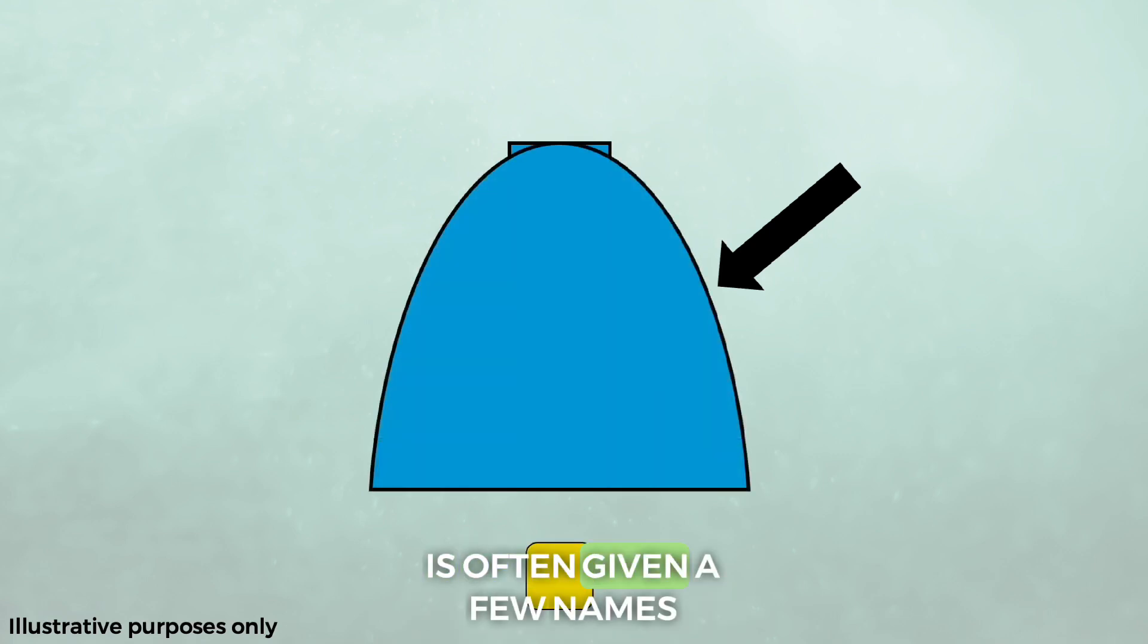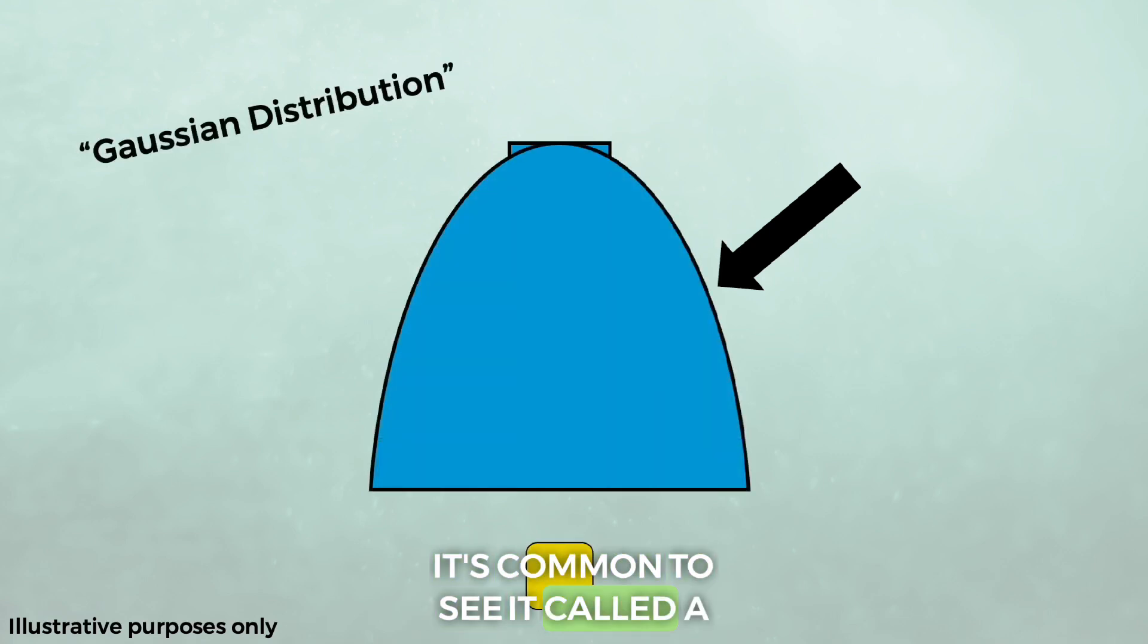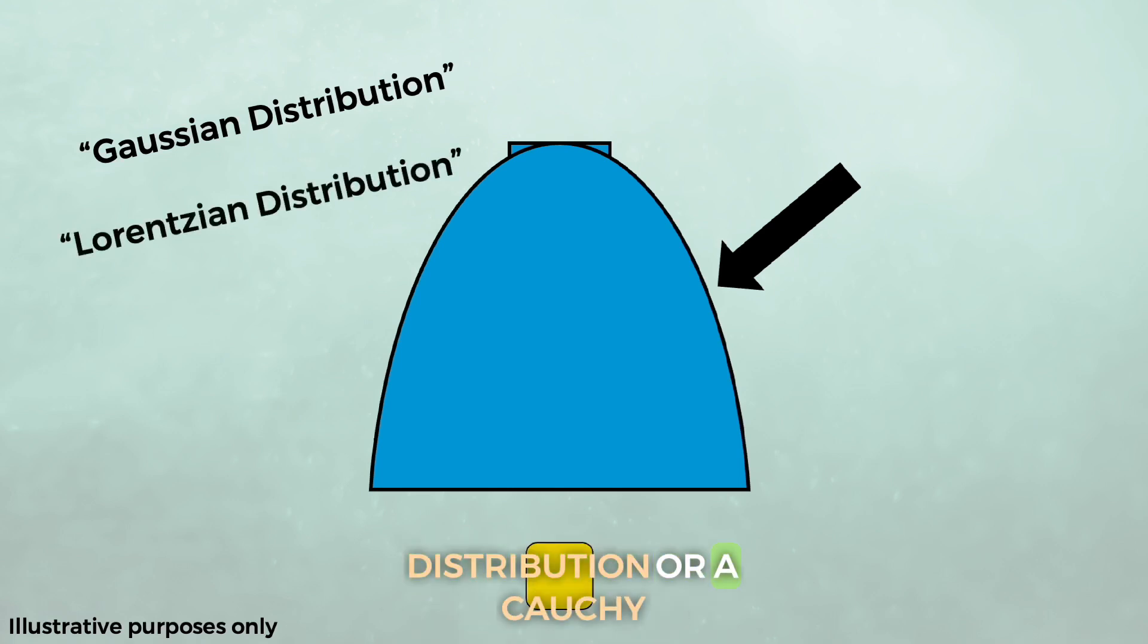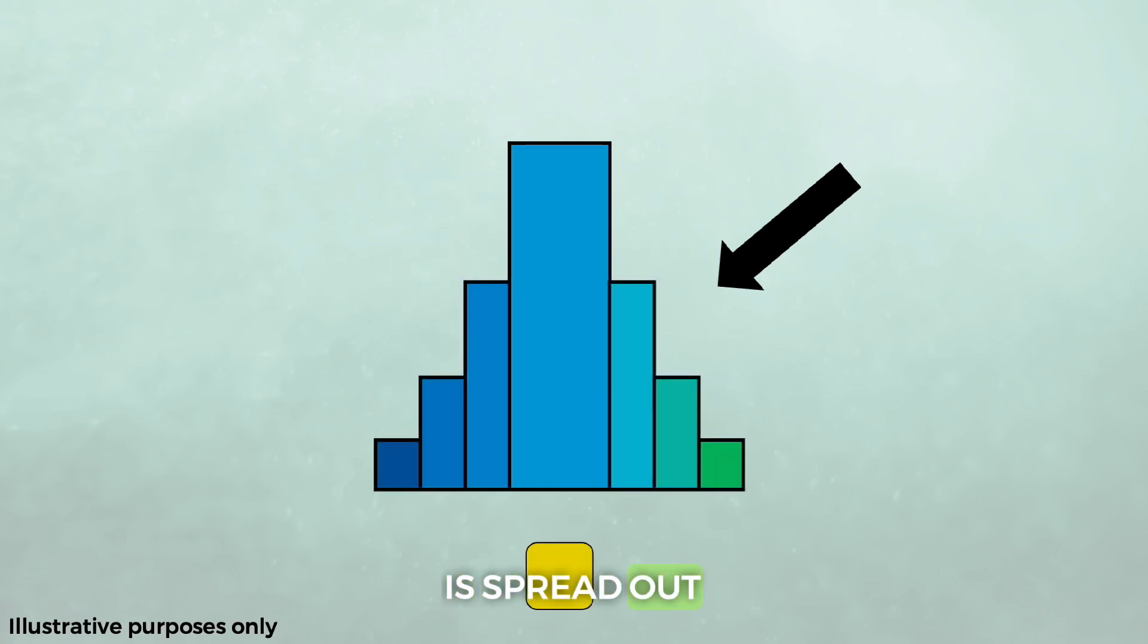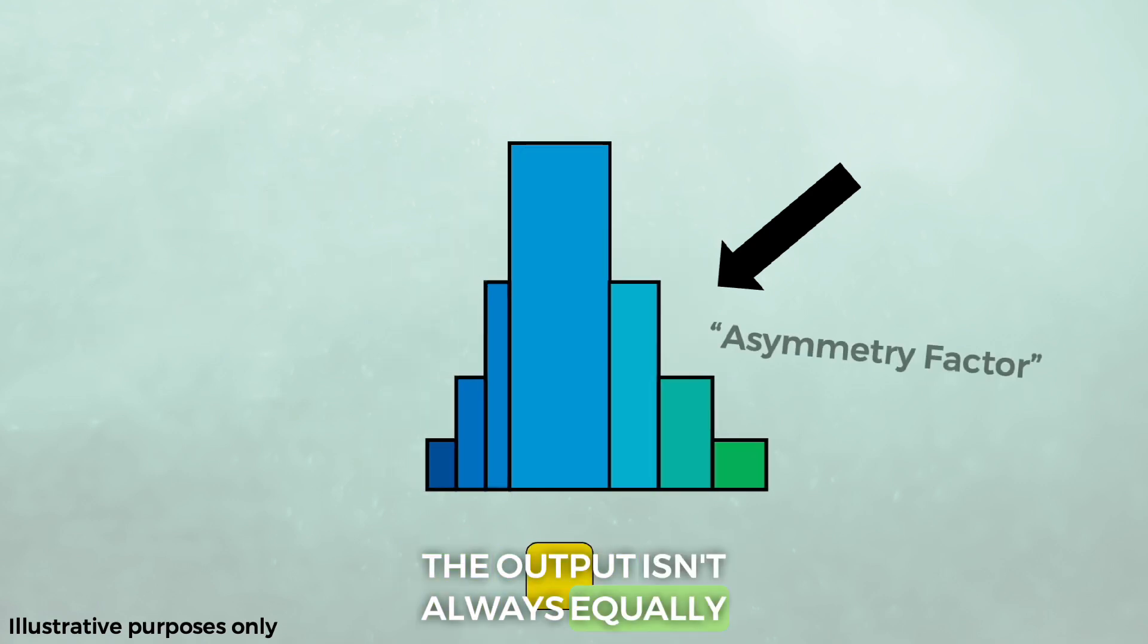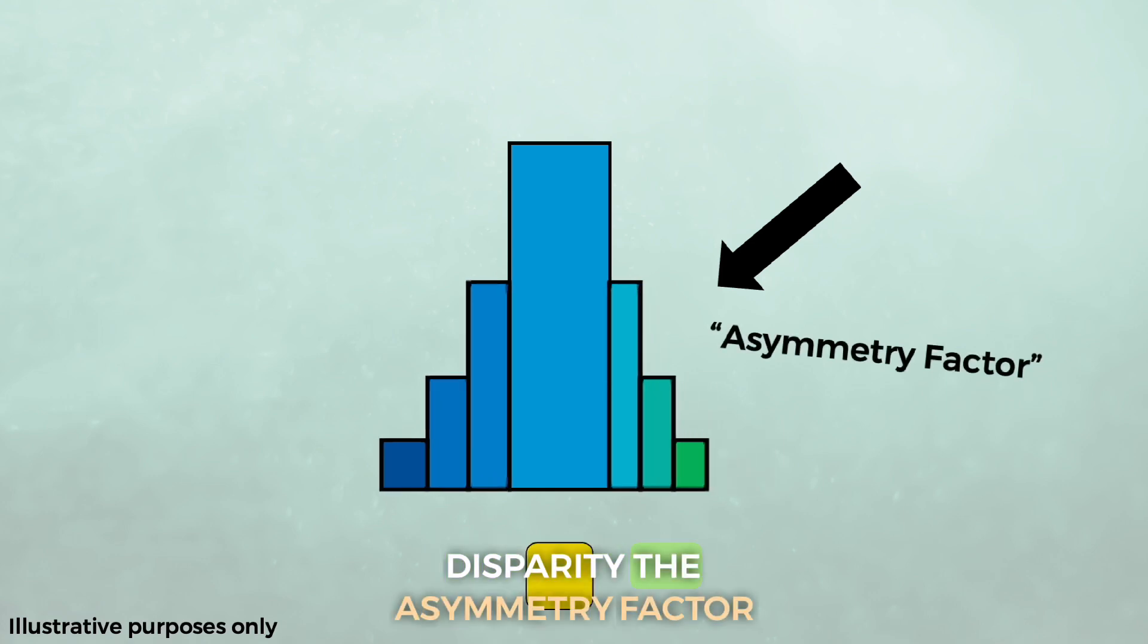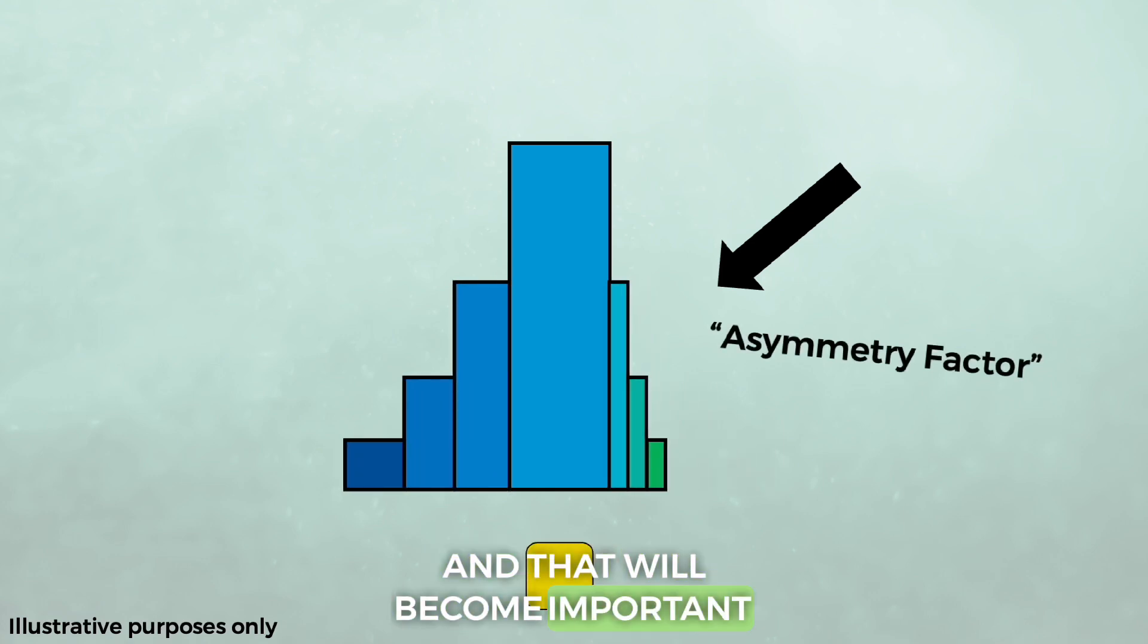You'll actually notice that the spectral output resembles a pyramid or a parabola. This shape of spectral output is often given a few names. It's common to see it called a Gaussian distribution, but actually the more technical terms would be a Lorentzian distribution or a Cauchy distribution. And something we look for in technical files is how this shape is spread out. The output isn't always equally spread, and we call this disparity the asymmetry factor, and that will become important shortly.